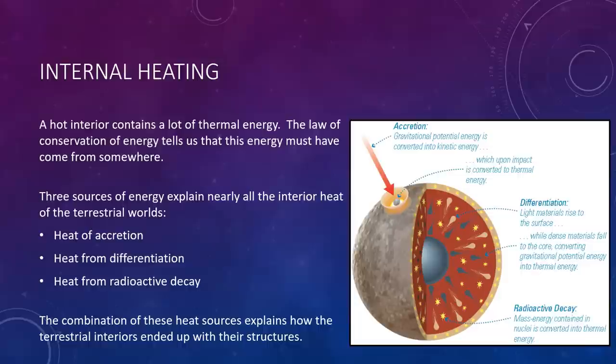The next is heat from differentiation. We've been talking now a couple times of the process of differentiation, where heavy material sinks to the bottom and lighter material floats to the top. When a world undergoes differentiation, the sinking of dense material and rising of less dense material means that mass moves inward, losing gravitational potential energy. This energy is converted into thermal energy by the friction generated as material separates by density. Basically, you have material moving up, some moving down, they are rubbing past each other, and just like if you were to rub your hands together right now, you would feel them warm up a bit. So that friction generates some of that heating.